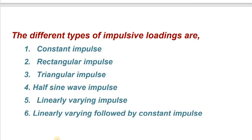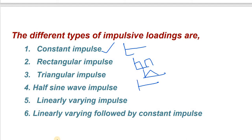The different types of impulsive loading are: constant impulse, which is a constant load; rectangular impulse, where the loading is rectangular in shape; triangular impulse, where the loading is triangular; half-sine wave; and linearly varying impulse followed by constant impulse. These are some of the types which we need to study.